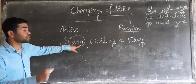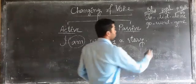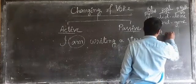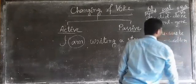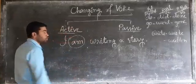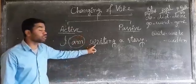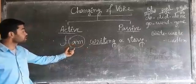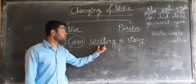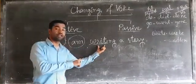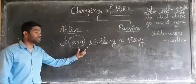After the be-verb, the third form of the verb should also be present in the same sentence. 'Write' is the main verb here. The third form of 'write' is 'written' — write, wrote, written. But here, 'writing' — the first form with -ing — is available, not the third form. So the first condition to be passive is fulfilled — be-verb is there — but the second condition, the third form, is not available. So this sentence is active, not passive.